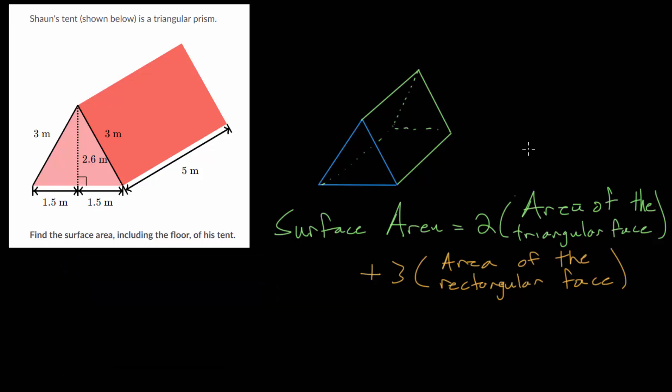And to calculate the area of the triangular faces, we need the formula for the area of some triangle. And that's always just half whatever the base of the triangle is, multiplied by the height of the triangle.